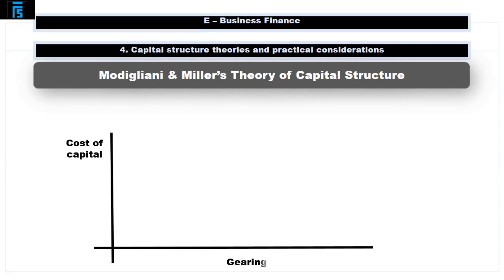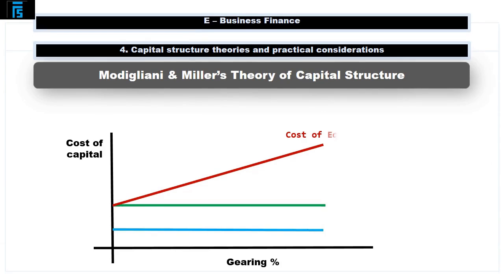Let's look at the graph to demonstrate their theory. As you can see, the WACC lies between the cost of debt and equity on the graph — it is constant. Any increase in gearing will increase the cost of equity, but it is offset by the cheaper debt financing, so the WACC remains the same.